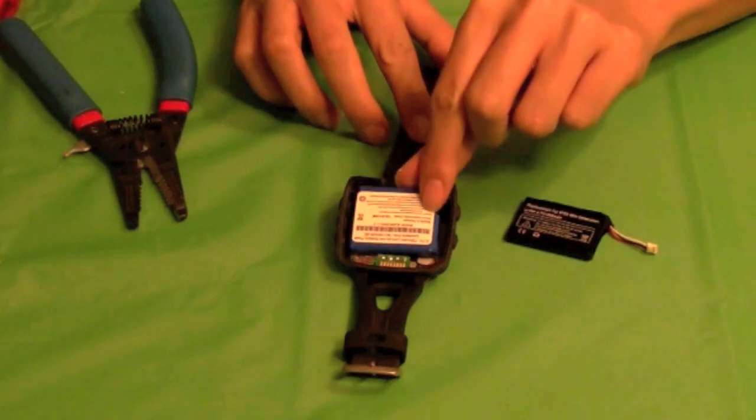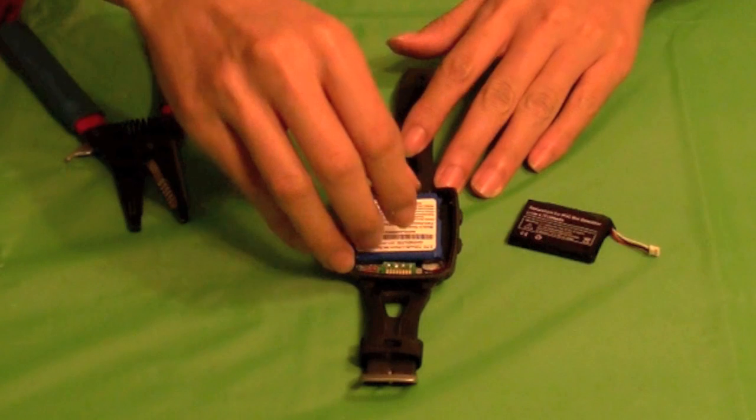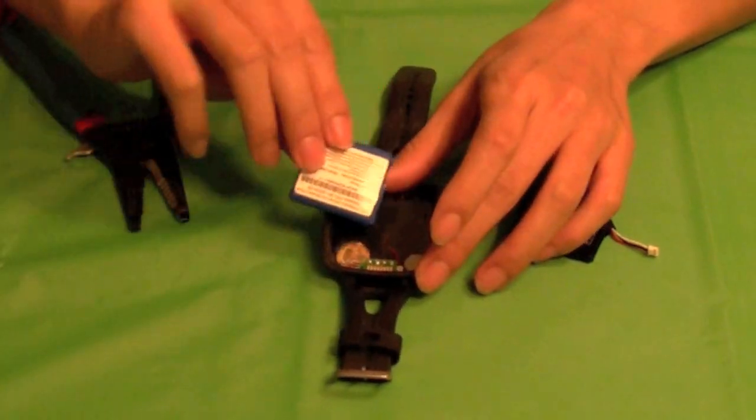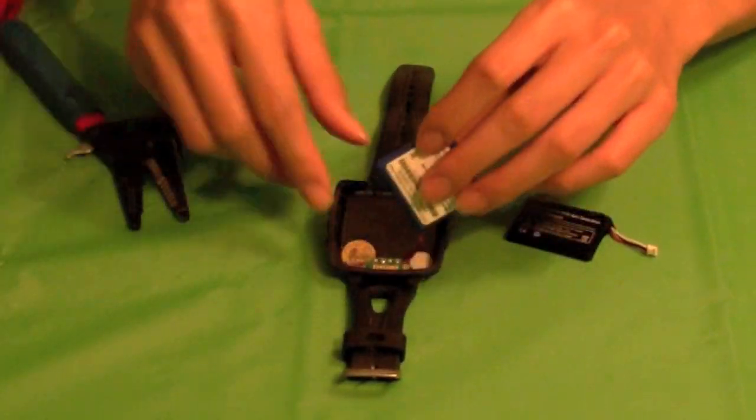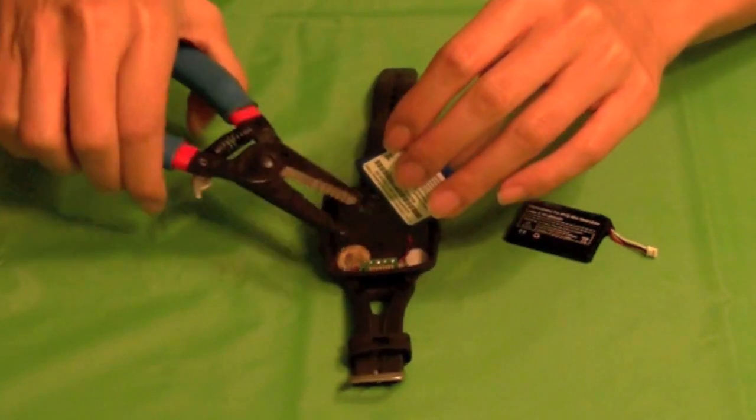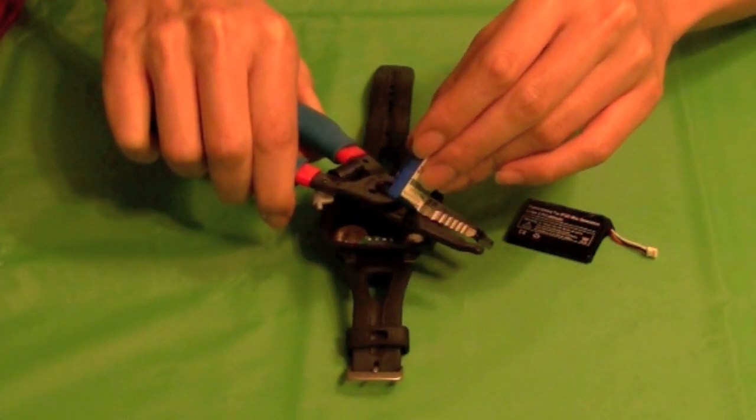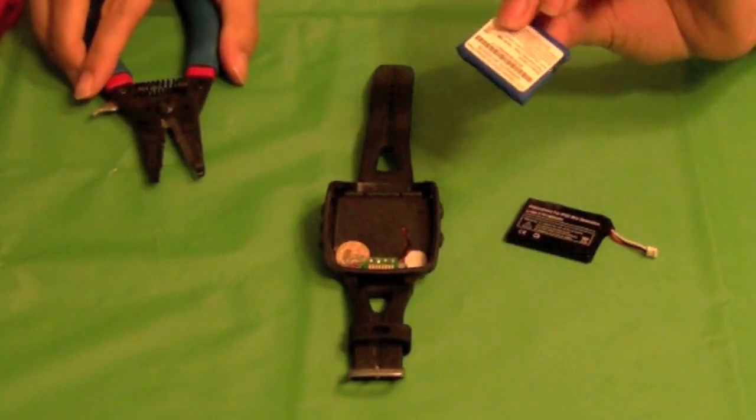Now that we have our Garmin Forerunner 305 taken apart I'm going to remove the old battery. If you can see I've got these two wires, the black and the red wire. I'm going to cut it as close to the battery as I possibly can to give myself the most amount of room to work with.